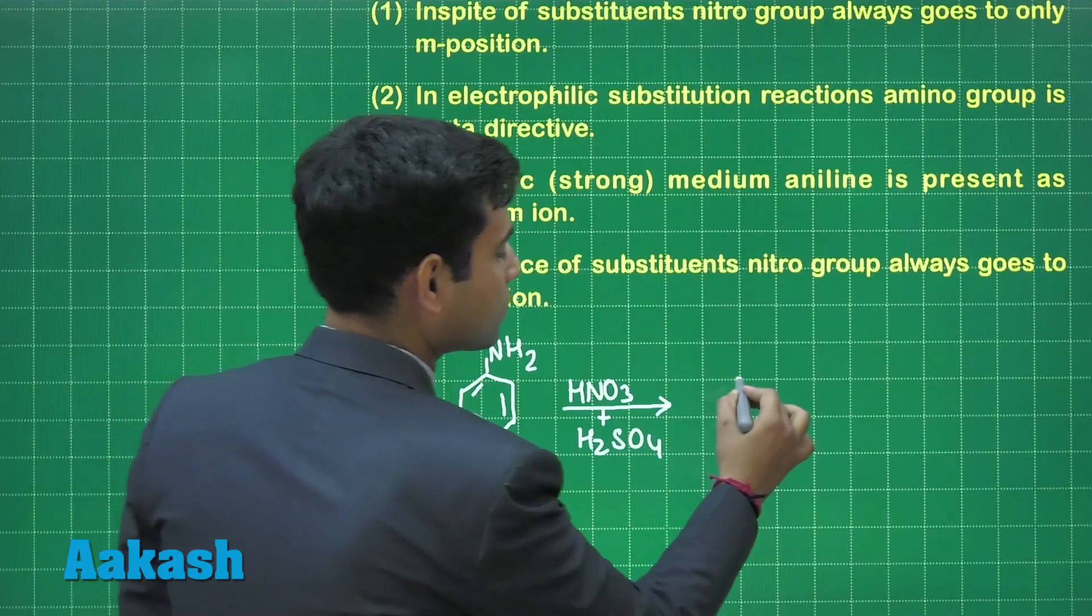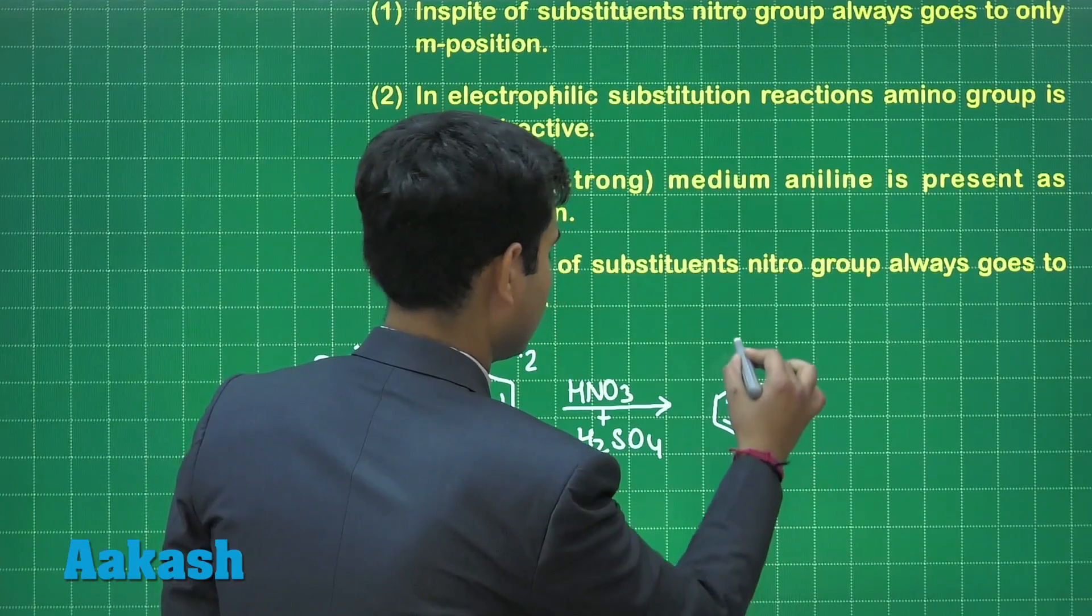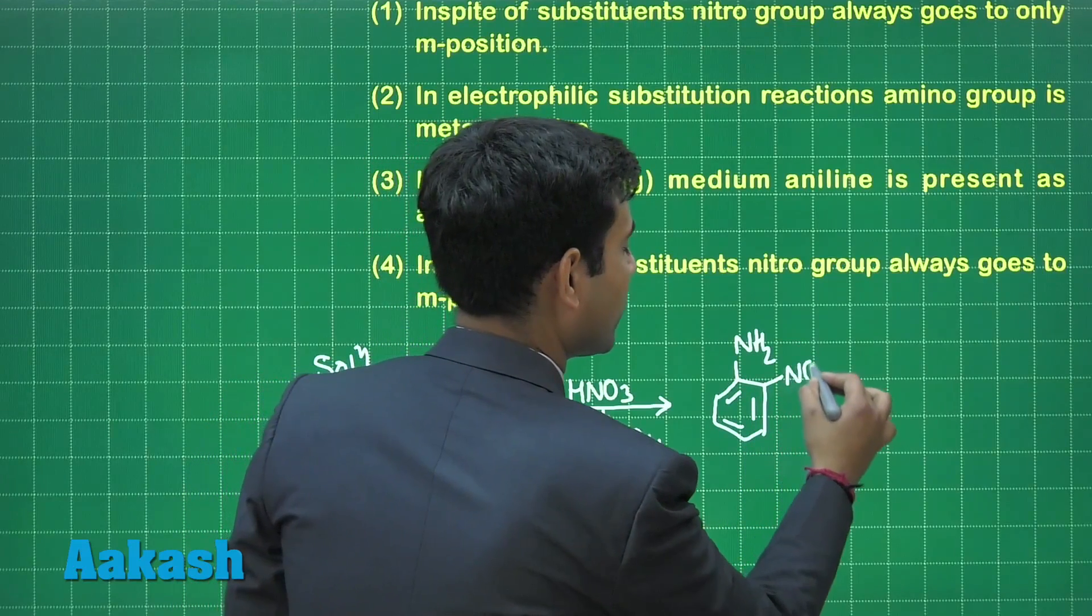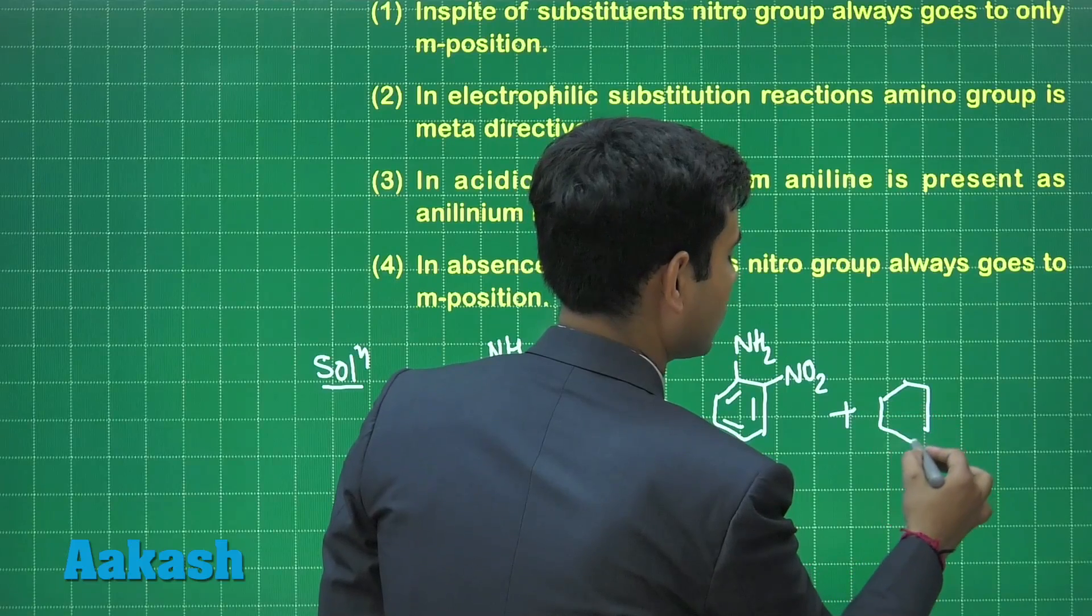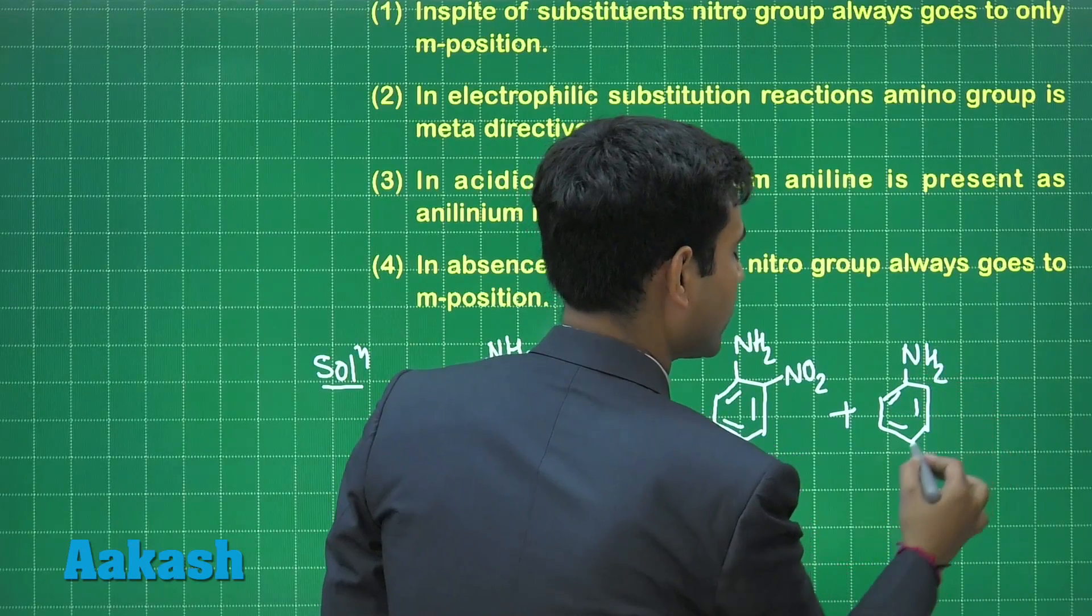it gives us ortho nitroaniline, para nitroaniline, as well as meta nitroaniline.